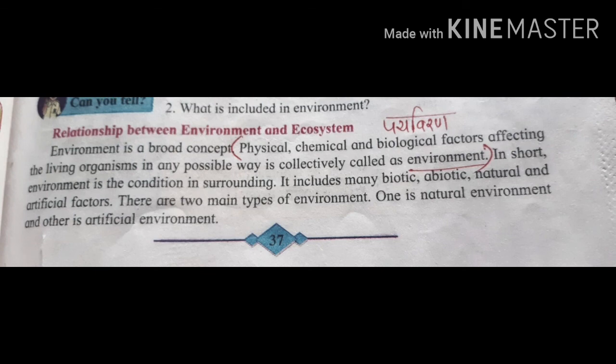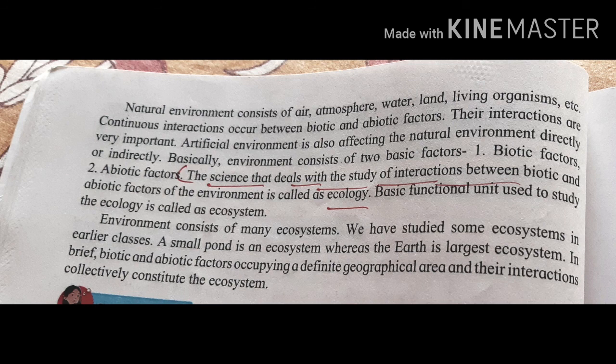There are two main types of environment. One is natural environment — Naisargic Paryavaran — and the other is artificial environment — Krotrim Paryavaran. Natural environment consists of air, atmosphere, water, land, living organisms, etc. Continuous interaction occurs between biotic and abiotic factors. Artificial environment is also affecting natural environment directly or indirectly.